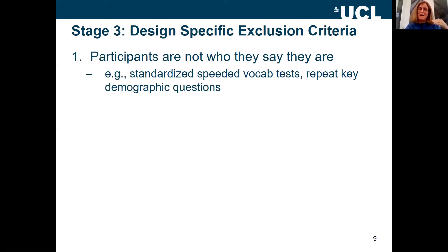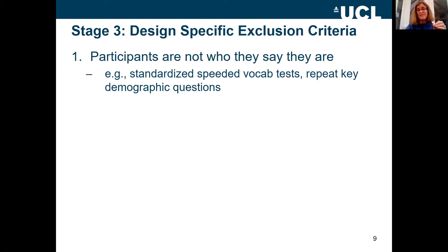You need to build things into the design of your experiment, and you can't always do this after data has come in. Think ahead of time: do I need a speeded vocabulary test? Do I need to ask repeated demographics questions in different ways at the beginning and the end to make sure I'm getting consistent responses? There are lots of solutions, but you need something finely tuned to the things you are most worried about.